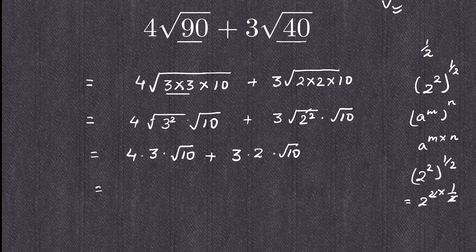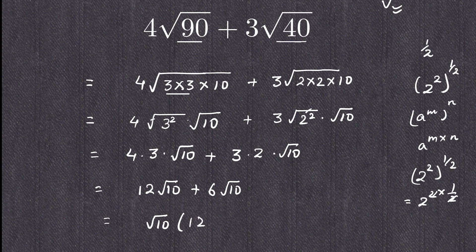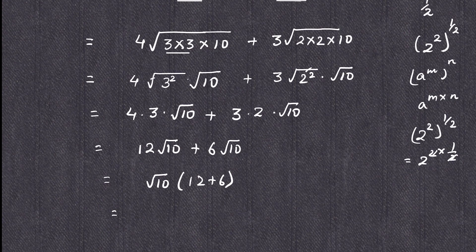Now this can be written as 4 × 3 = 12, so 12√10, plus 3 × 2 = 6, so 6√10. Taking √10 as common, we get 12 + 6 = 18. The answer is 18√10.